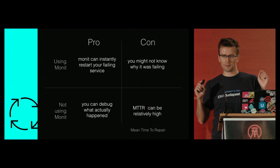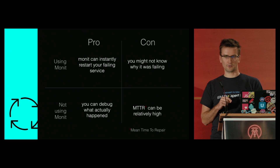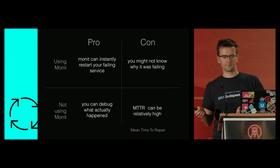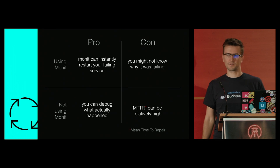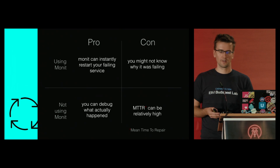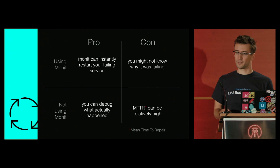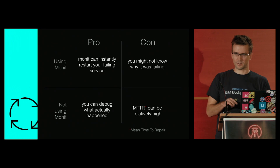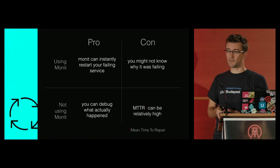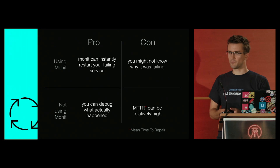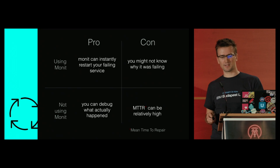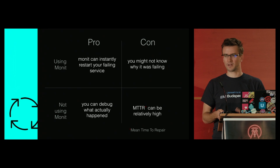Like every automation tool, process supervision comes with a few compromises. You can use tools like Monit and your service is instantly restarted if there's a problem, but you might miss the reason for the error. Or you can rely on remote monitoring and swoop in to start debugging if there's a problem — this way you can easily find out what the problem was, but the mean time to repair may get high and your users will suffer. It really depends on what error logging capabilities and debugging needs you have.